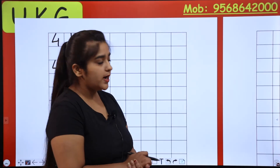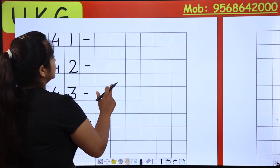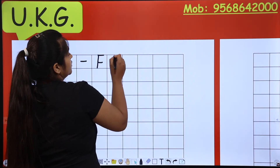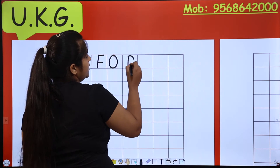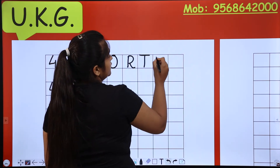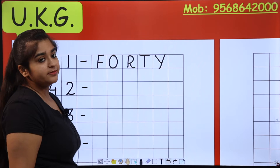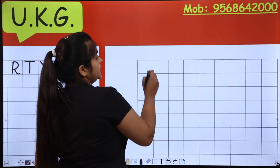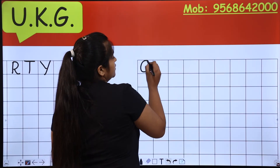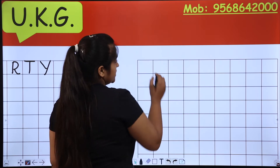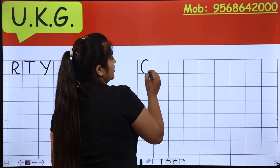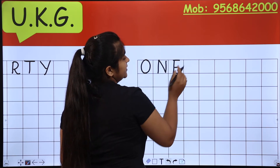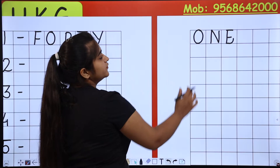41. I have learned the spelling. 4 is F-O-R-T-Y. Then for 1, we write O-N-E. So 41 is FORTY-ONE.